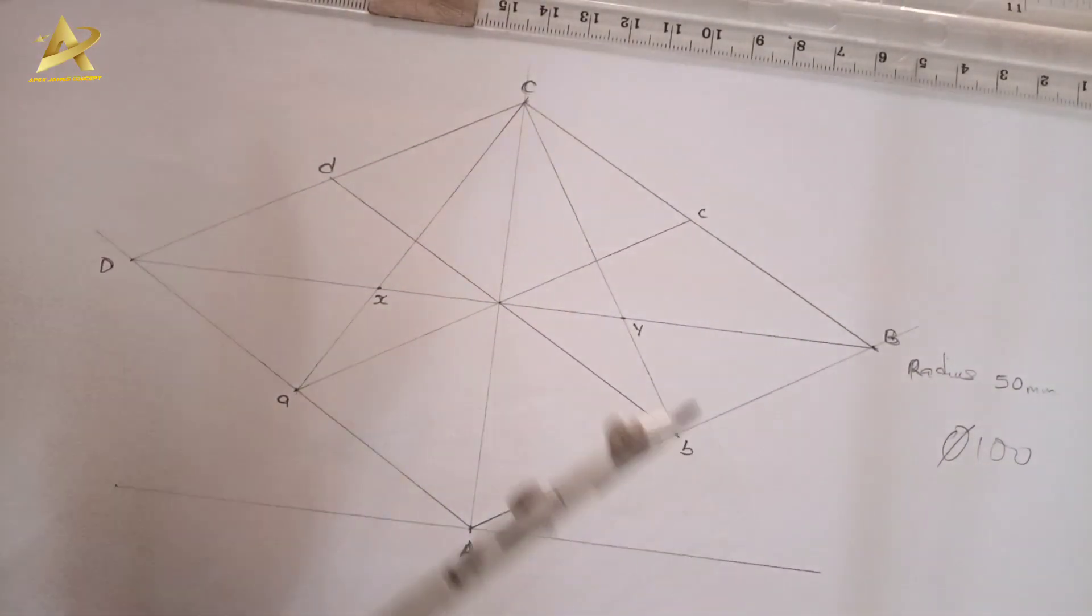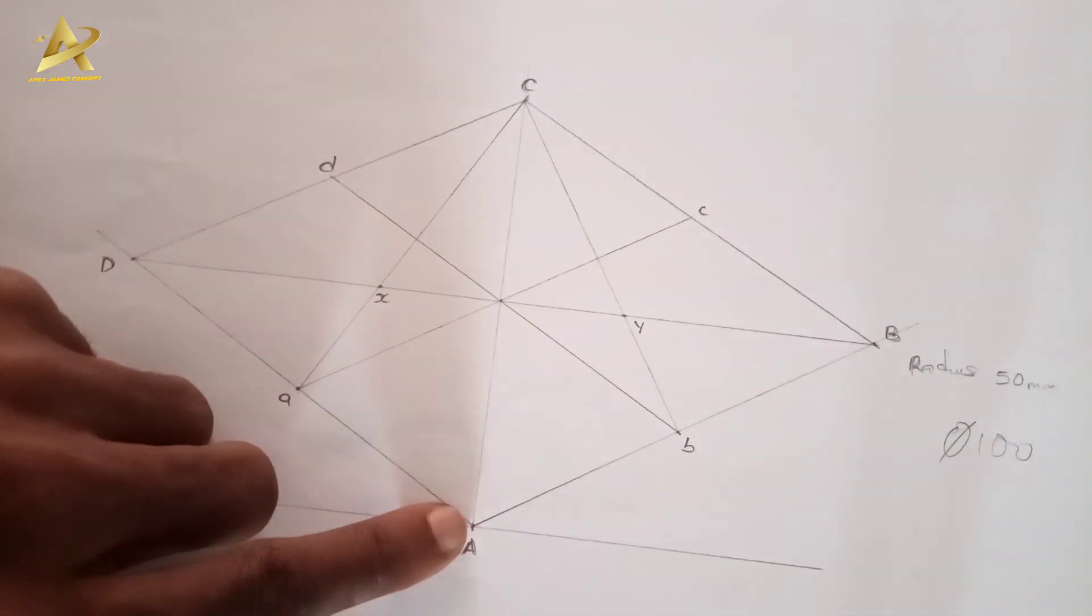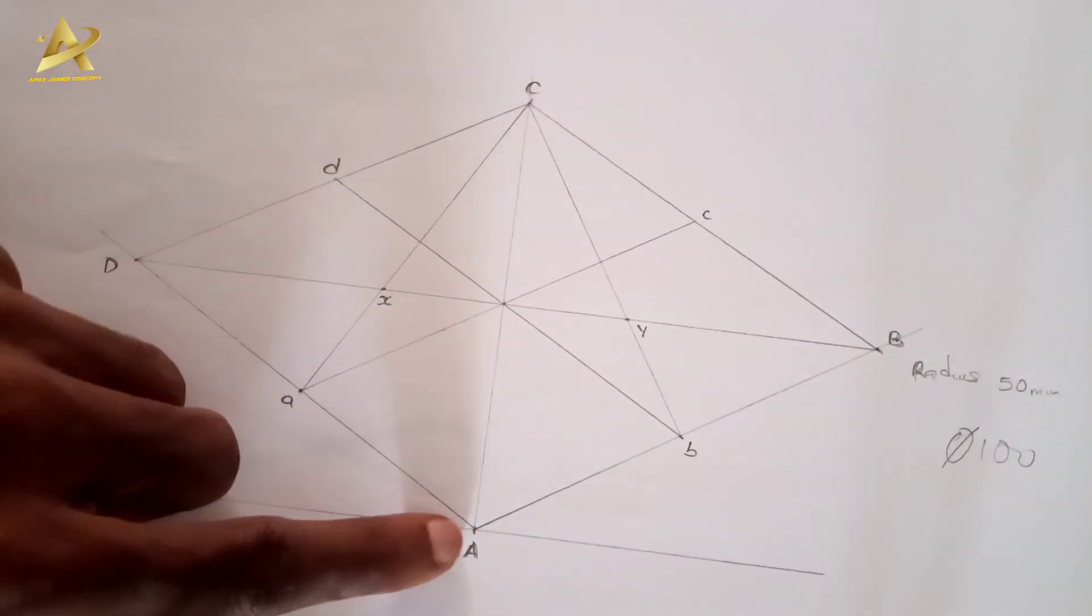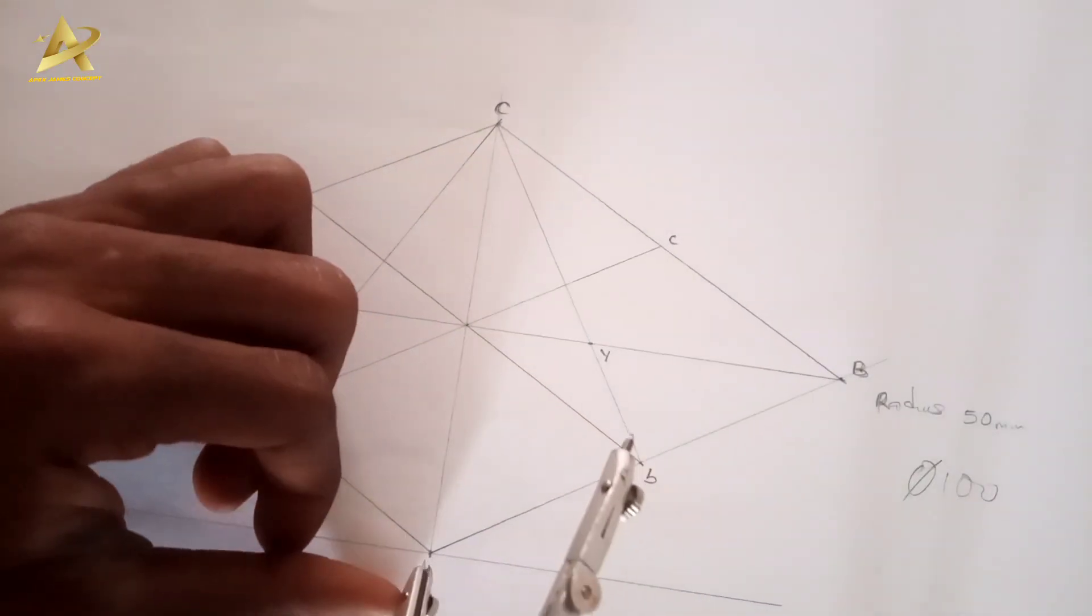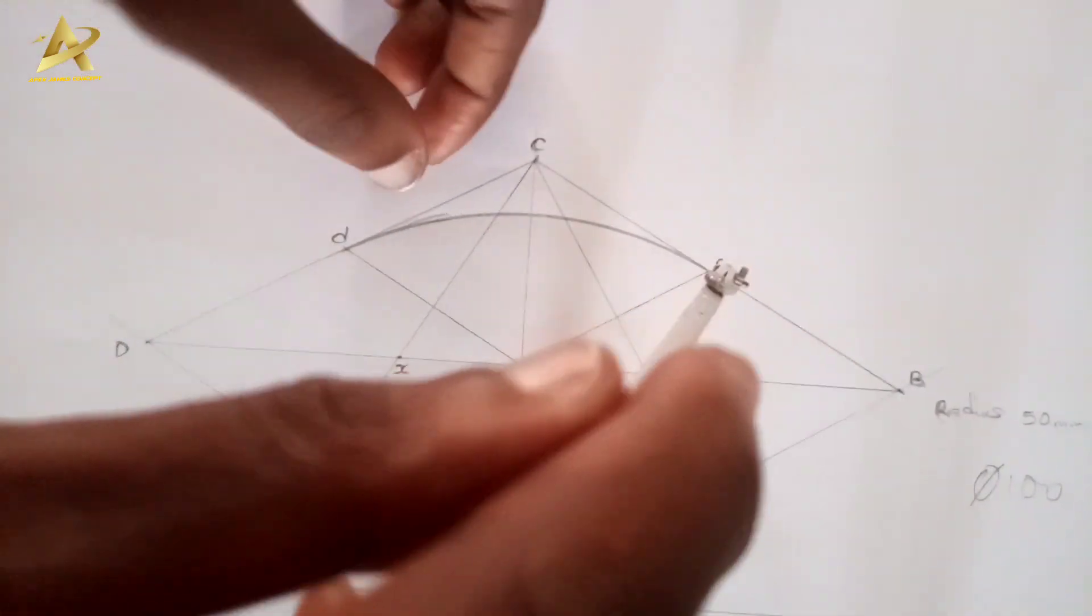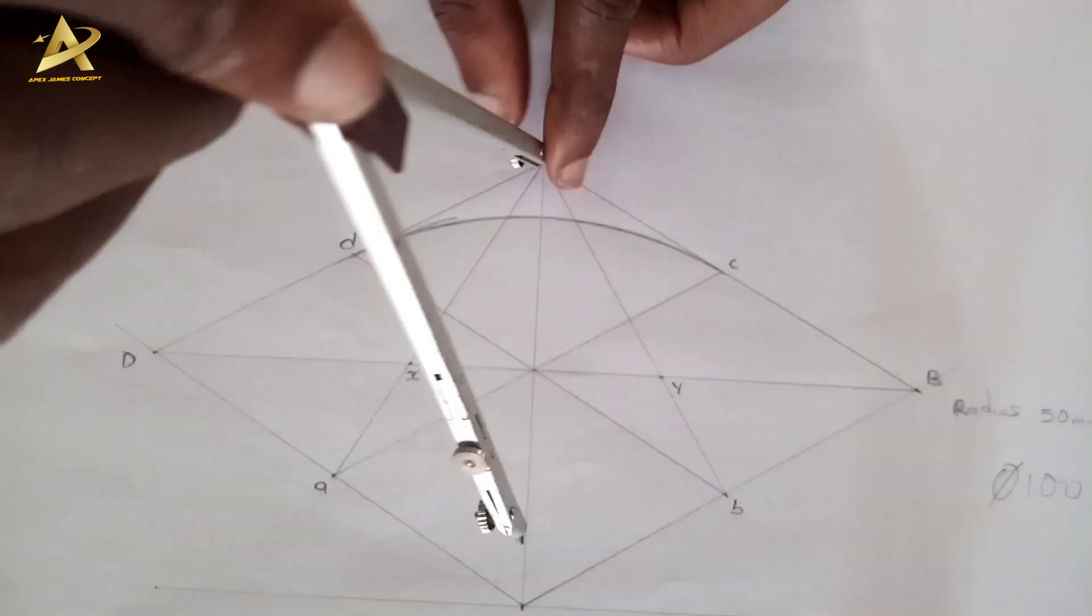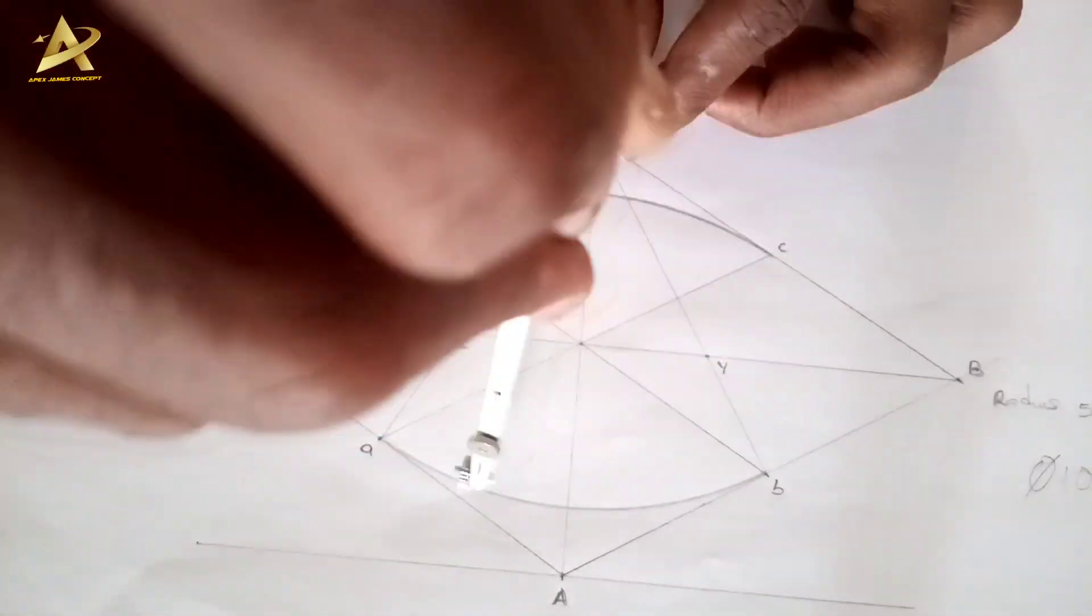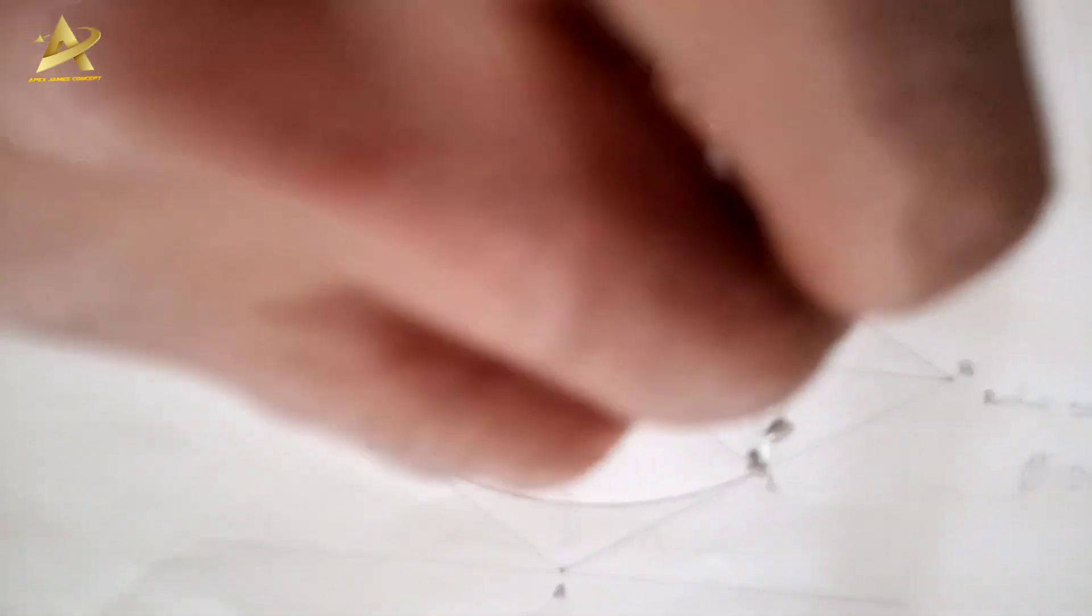Now I'll employ my compass. I'll take the first radius - capital A to small letter d or capital A to small letter c, that's AD or AC, as my first radius and I'll draw an arc. With that same radius I'll keep my compass on C and draw.